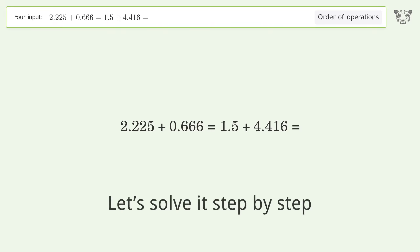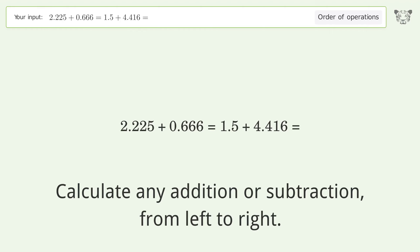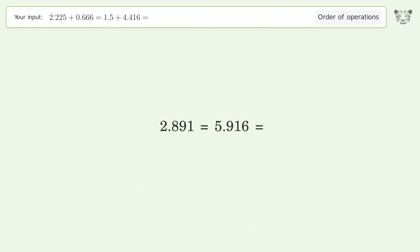Let's solve it step by step. Calculate any addition or subtraction from left to right. 2.225 plus 0.666 equals 2.891. 1.5 plus 4.416 equals 5.916. And so the final result is 2.891 and 5.916.